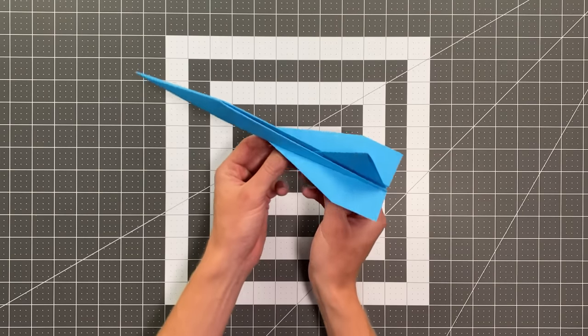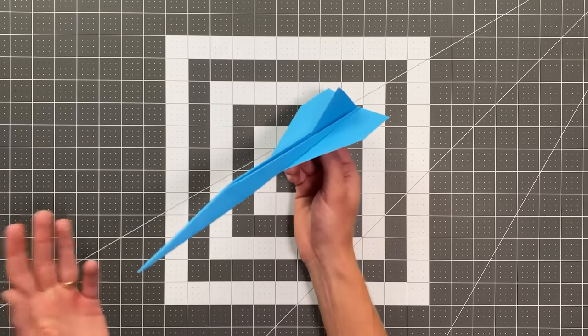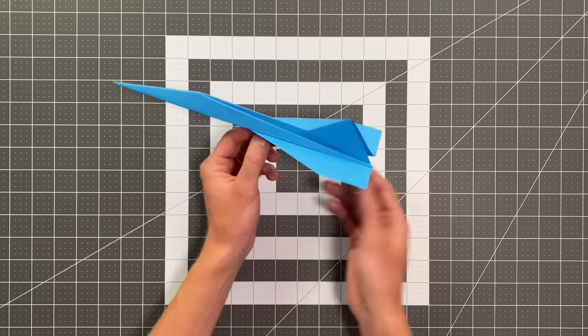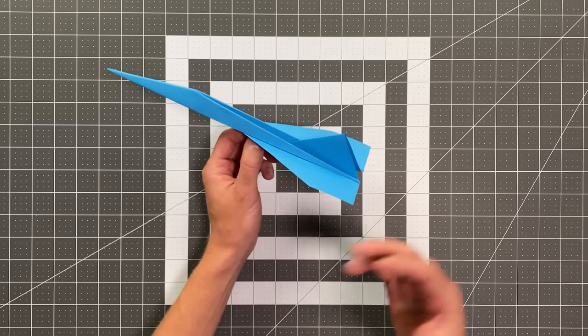Concorde is one of those classic paper airplanes that has been around so long that no one really knows who originally designed it. In fact, this is basically just the classic dart turned into a jet.